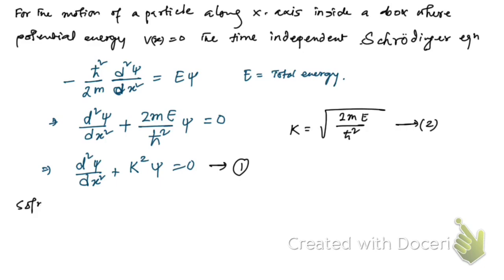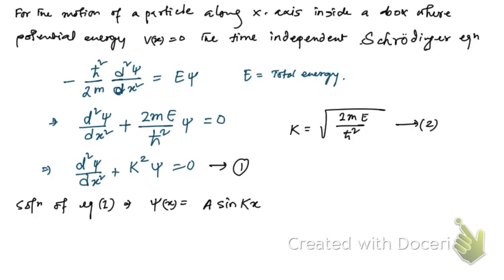The solution of this kind of differential equation (1) is given by ψ(x) = A sin(kx) + B cos(kx), where A and B are constants of integration.